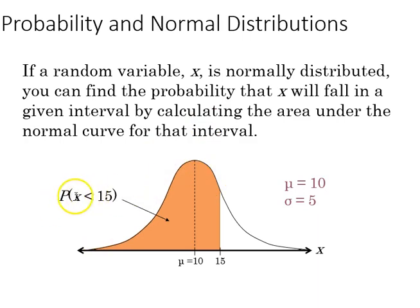In this case, if we're wondering the probability of X falling below 15, we need to learn what the area, the cumulative area, of the curve is that's to the left of 15.